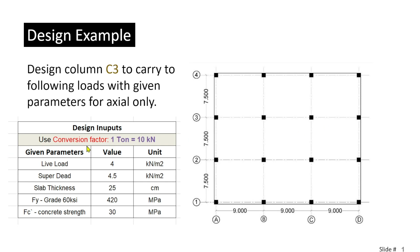So we have our design inputs and given parameters: live load 4 kN per meter square, super dead load 4.5 kN per meter square, slab thickness 25 centimeters, Grade 60 steel with yielding strength of 420 MPa, and concrete compressive strength fc' of 30 MPa.